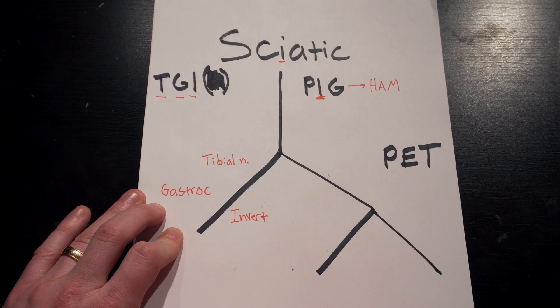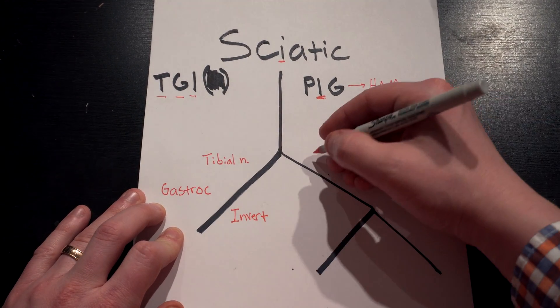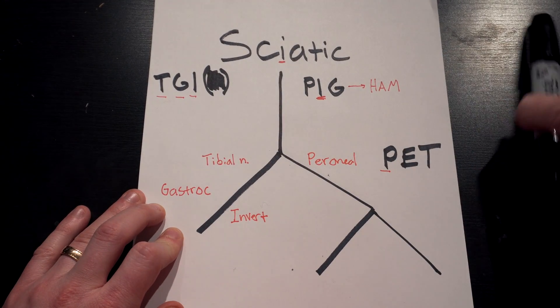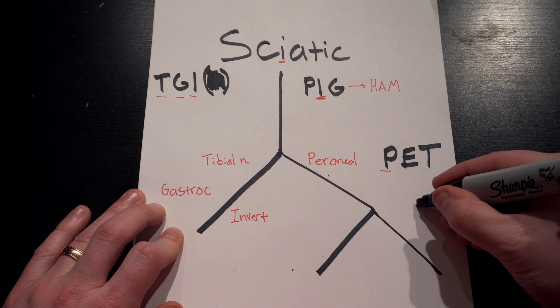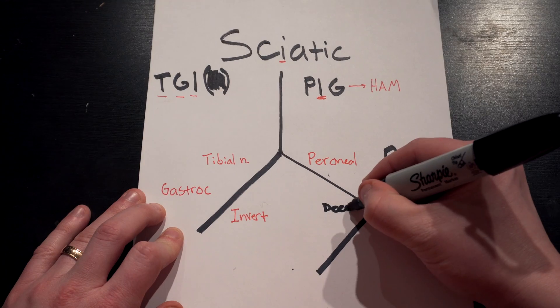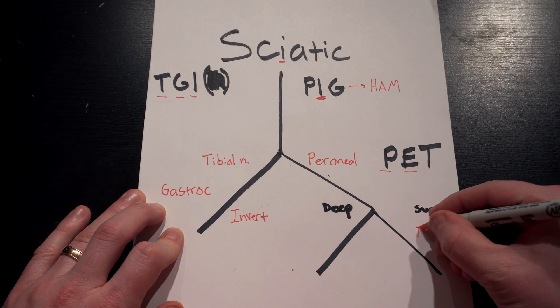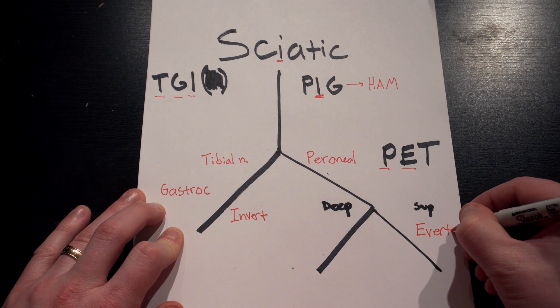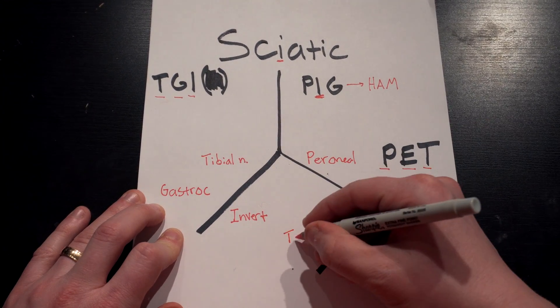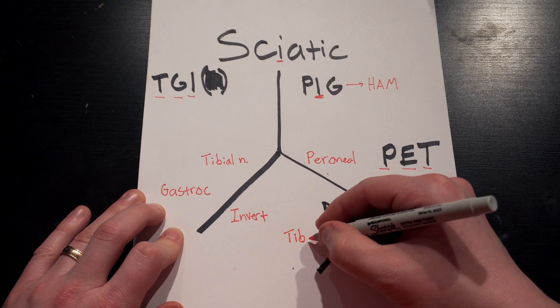Now let's move over to PET. PET helps us remember with the P that this is the peroneal nerve, which further splits down into a superficial and a deep branch. The superficial nerve everts the foot. The deep portion activates the tibialis anterior, and the tibialis anterior is going to dorsiflex the foot. So that's the sciatic nerve — we've got it down, and that is the toughest one.